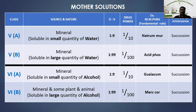Mother solution class 5A — from mineral kingdom, soluble in small quantity of water. Drug-vehicle ratio is 1:9, drug power is 1/10. Fundamental rule is Natrium muriaticum (sodium chloride), which is very easily soluble in water. Method of potentization is succussion. Class 5B — mineral kingdom, requires large quantity of water to dissolve (sparingly soluble). Drug-vehicle ratio is 1:99, drug power is 1/100. Fundamental rule is Phosphoric acid. Method of potentization is succussion.